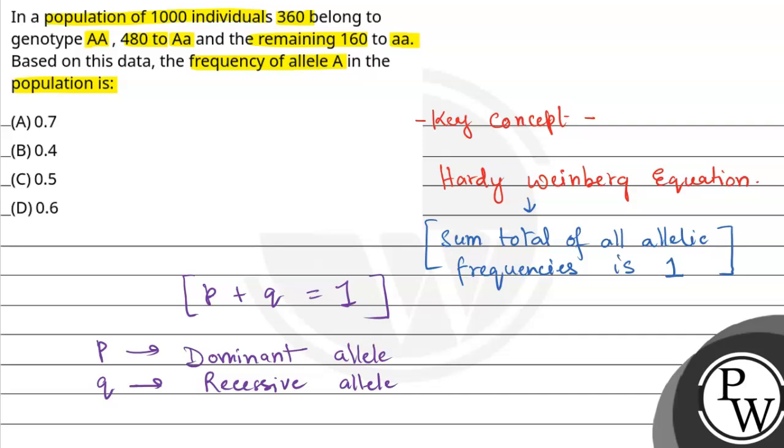Now if we write this equation in binomial expression form, then it will be p plus q whole square, which is equal to p² plus q² plus 2pq.